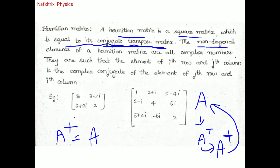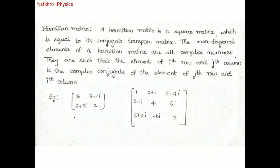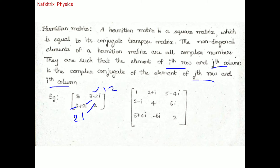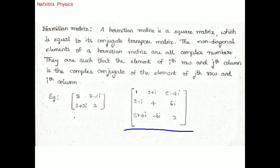The non-diagonal elements of a Hermitian matrix are complex numbers such that the element at row i, column j is the complex conjugate of the element at row j, column i. For example, if the (1,2) element is 3−2i, then the (2,1) element is 3+2i — they are complex conjugates of each other.